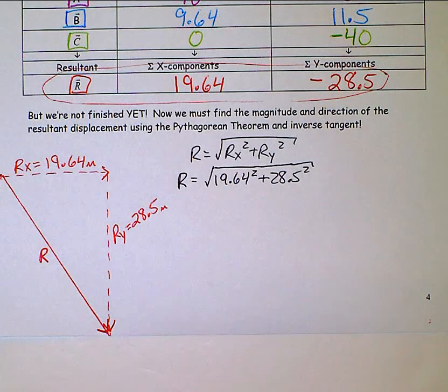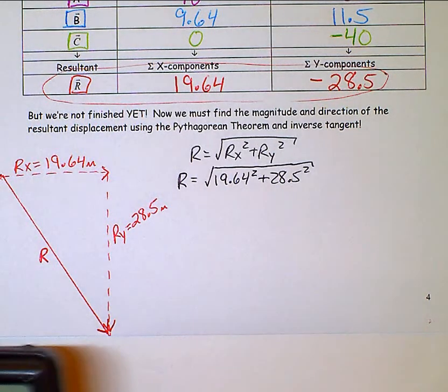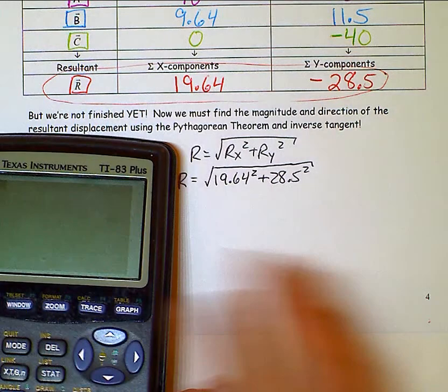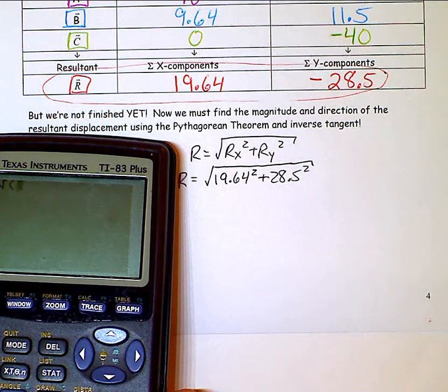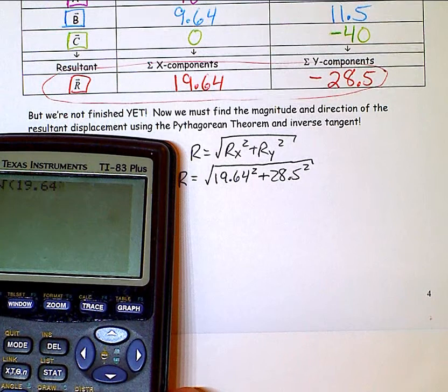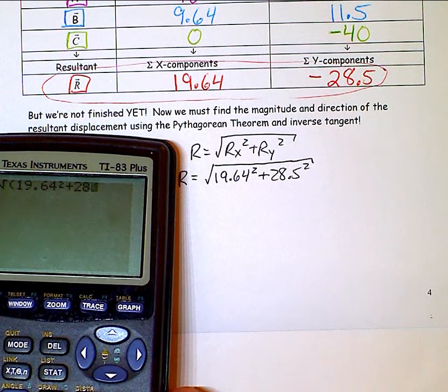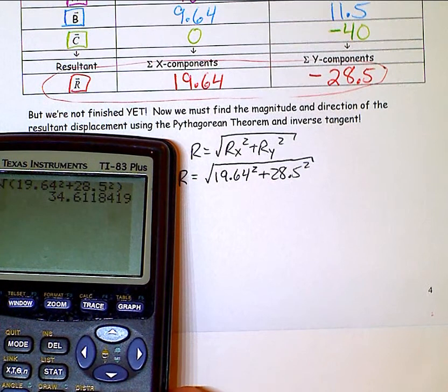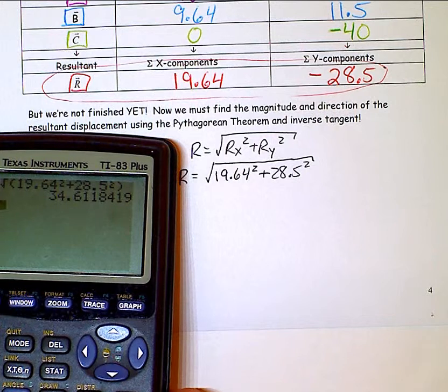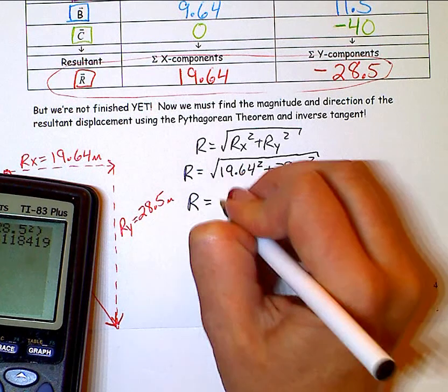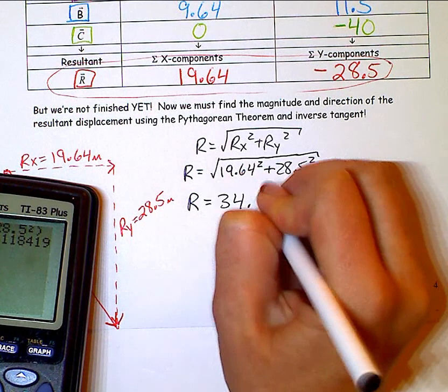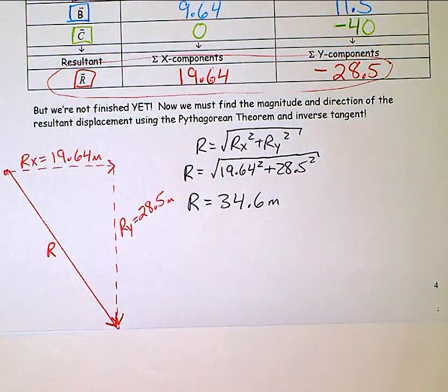It also doesn't matter the order that you write these in. I could have done 28.5 squared plus 19.64 squared, because it's all commutative. Addition doesn't matter. So I'm entering it just like that. Square root of 19.64 squared plus 28.5 squared. And I end up with 34.6 meters. So that is how far away the cow is now from where it started.